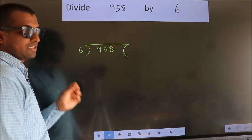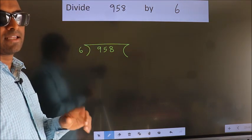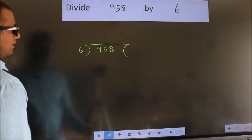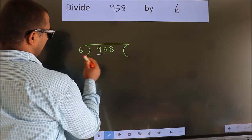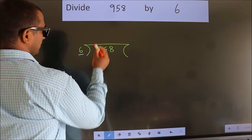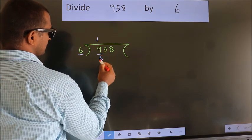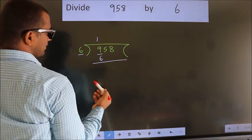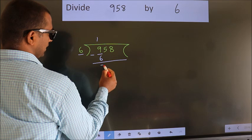This is your step 1. Next, here we have 9, here 6. A number close to 9 in the 6 table is 6 once 6. Now we should subtract. We get 3.